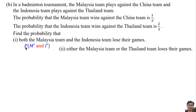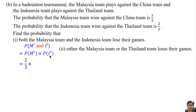P means probability. Malaysia's losing is represented by M prime; Indonesia's losing is represented by I prime. By using the formula, this equals P(M prime) × P(I prime). The probability of Malaysia losing: given that Malaysia's probability of winning is 1 over 3, losing equals 1 minus 1 over 3, which is 2 over 3. The probability of Indonesia losing: given that Indonesia wins with 2 over 3, losing equals 1 minus 2 over 3, which is 1 over 3. So the answer is 2 over 9.